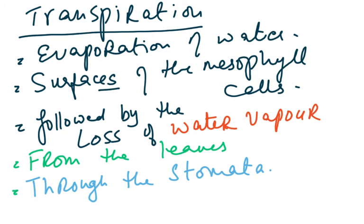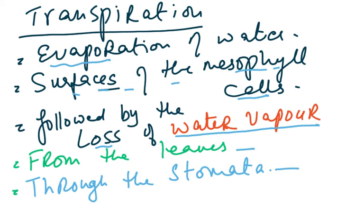Now let's look at the definition of transpiration. As per the syllabus: number one, it is the evaporation of water; secondly, from the surfaces of the mesophyll cells; and then this is followed by the loss of water vapor from the leaves through the stomata. First the water has to evaporate from the surfaces of the mesophyll cells, and then in a vapor state it goes out of the leaves through the stomata.